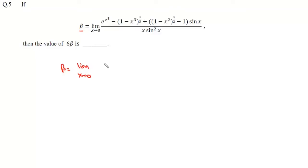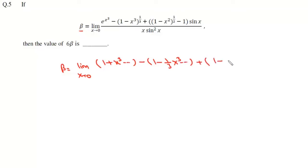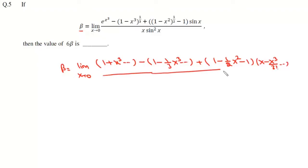Now, e to the power x cubed is 1 plus x cubed, and we discard higher powers. Minus: this is 1 minus x cubed to the power 1 by 3, so it will be 1 minus 1 by 3 x cubed plus higher powers. Then we have 1 minus 1 by 2 x squared, minus 1, and sin x is x minus x cubed over factorial 3, all divided by x, and this is x minus x cubed over factorial 3, whole squared.